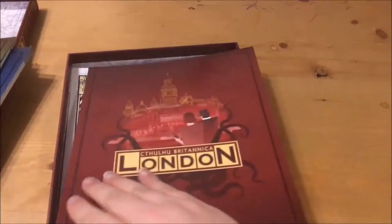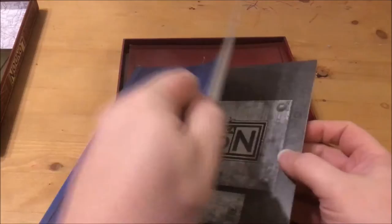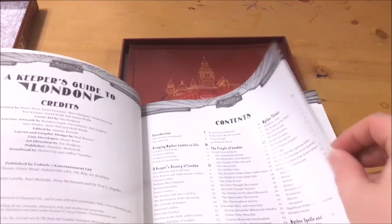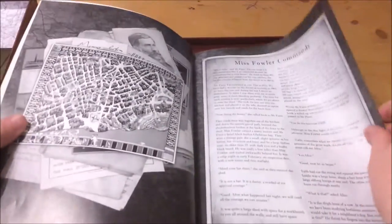Book two is entitled A Keeper's Guide to London. The first part of the book is a short story called Miss Fowler Commands which is not bad and serves well to set the mood for the rest of the book. The first chapter is called Bringing Mythos London to Life.